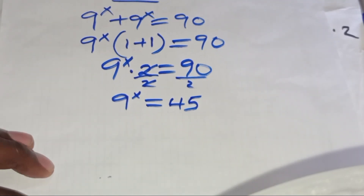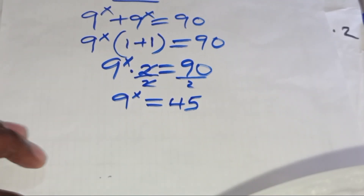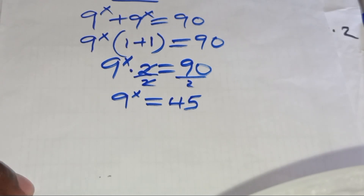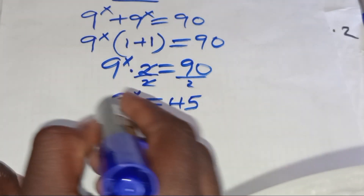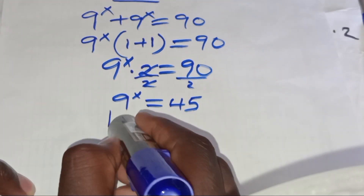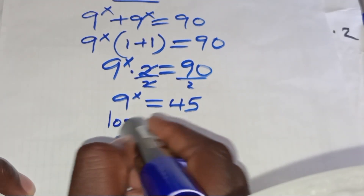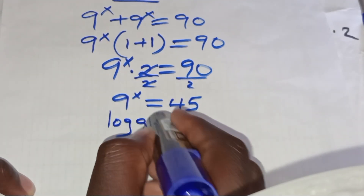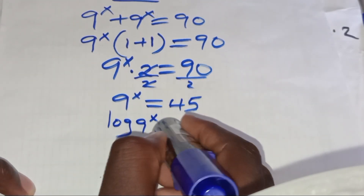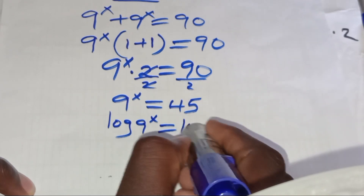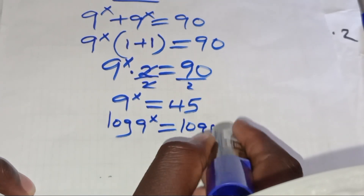To solve for the value of x, we introduce the natural logarithm on both sides, so we'll have log 9 to the power x equals log 45.